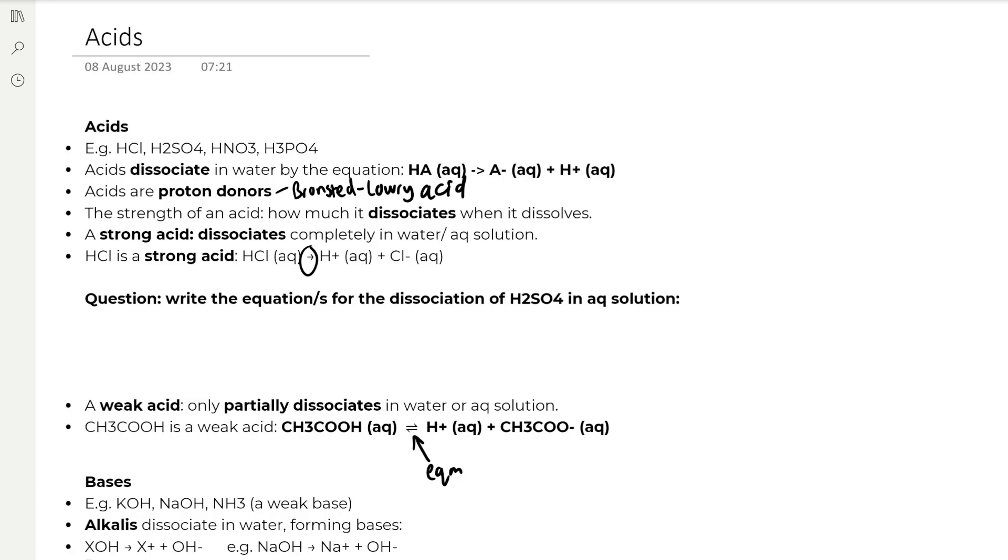We've got a question which is to write the equations for the dissociation of H2SO4 in aqueous solution. This is comprised of two equations because it has two H+ ions to donate. So the first equation is, and then the second equation is, but you can simplify it to an overall equation.